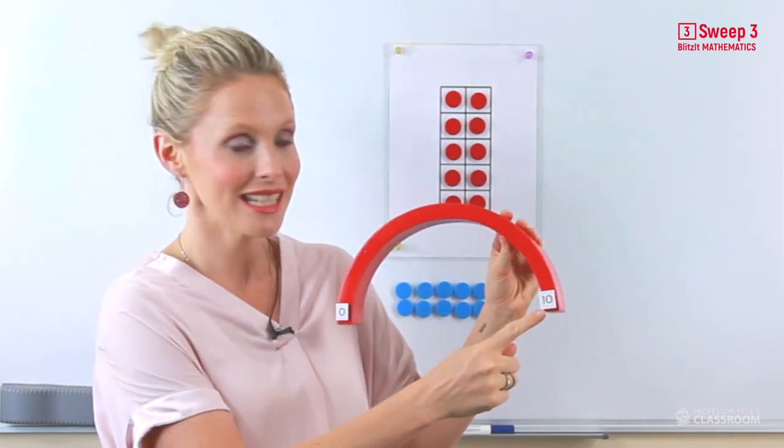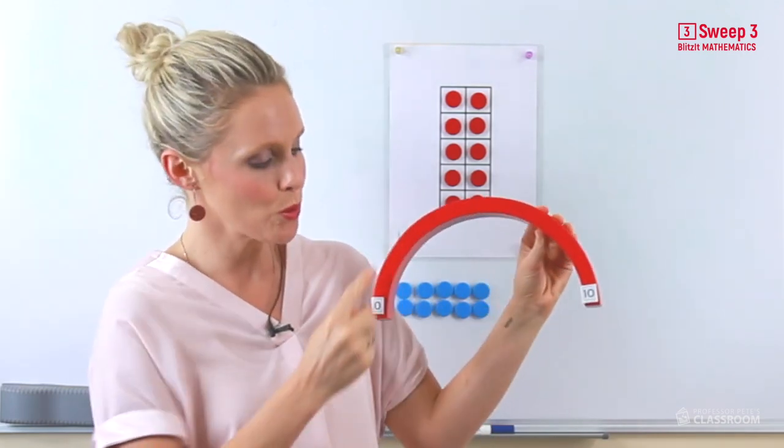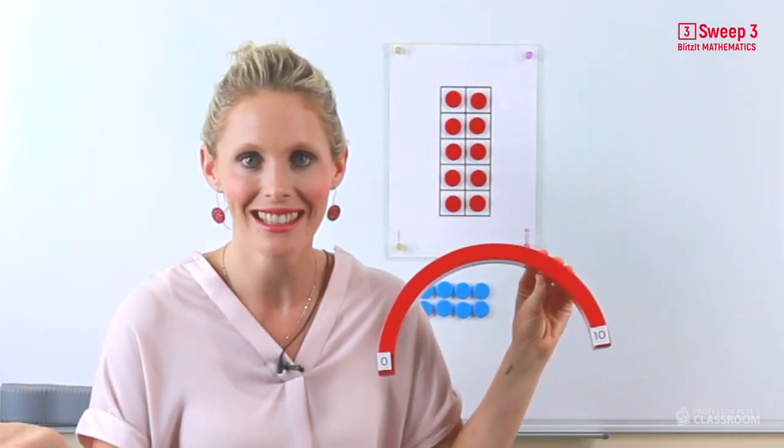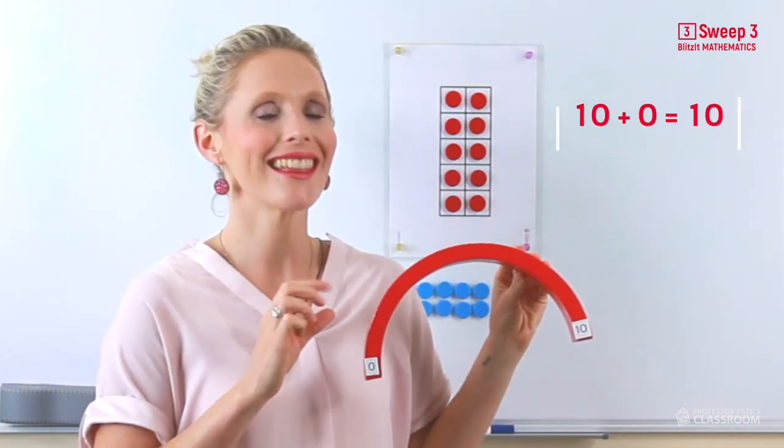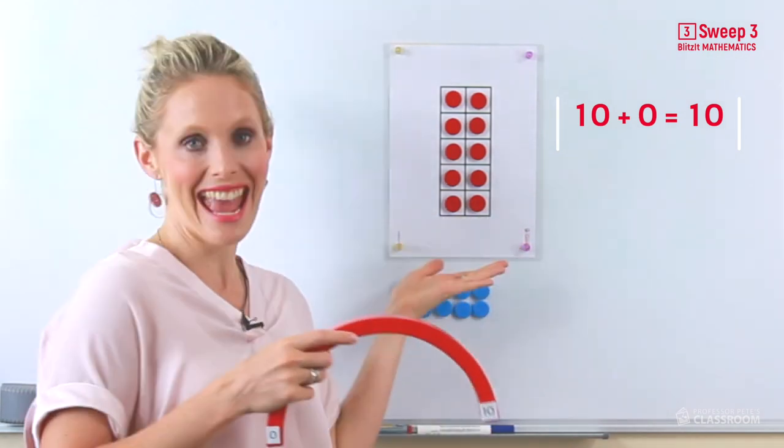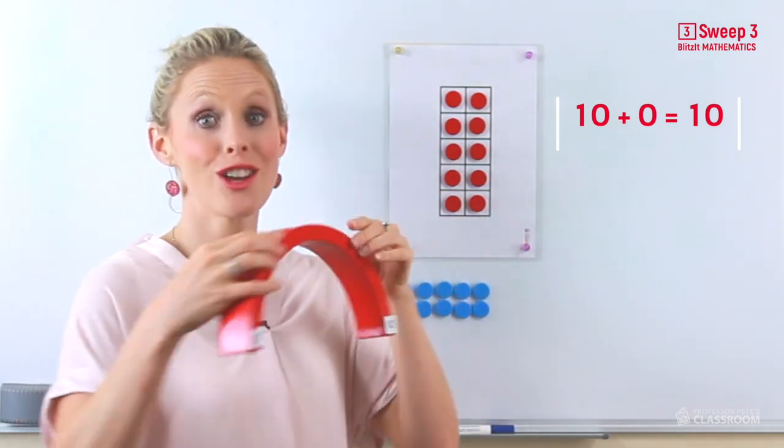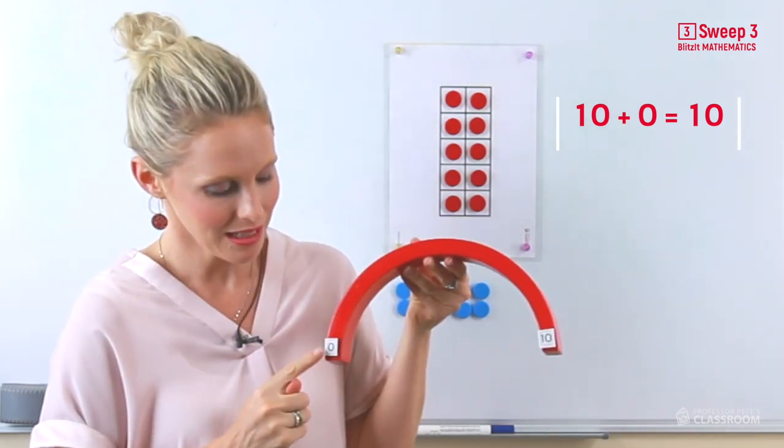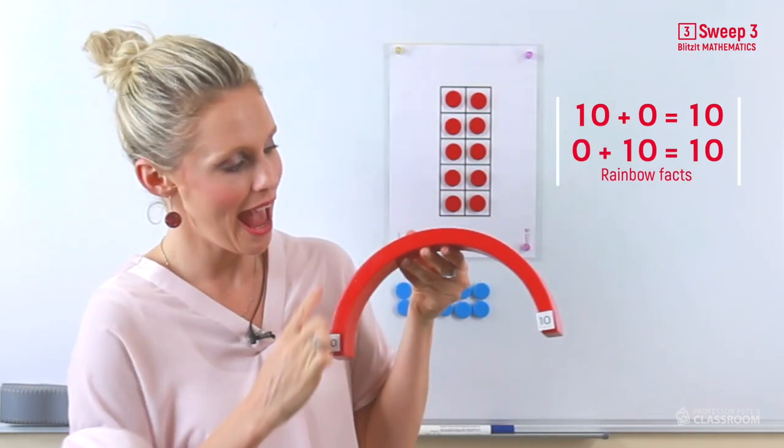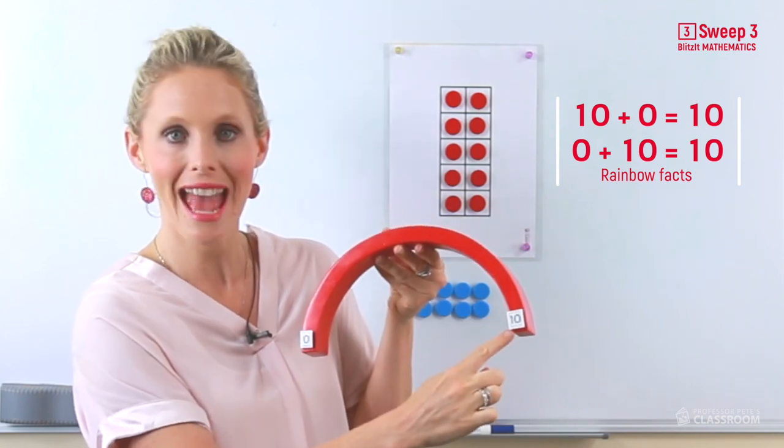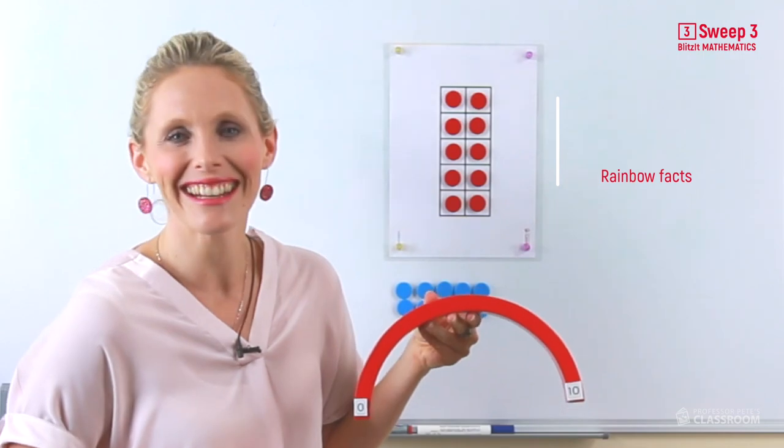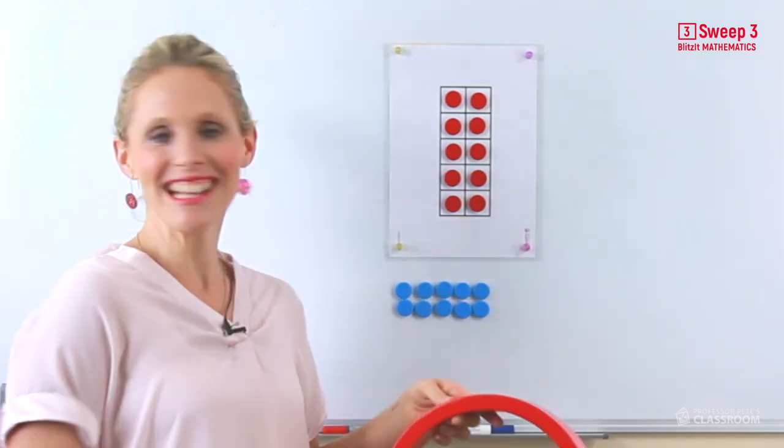Here we have 10. 10 and 0 which is nothing equals, that's right, 10. Now what about the turnaround? What happens if we look at 0 which is nothing and 10? It equals, you got it, 10. You guys are so clever.